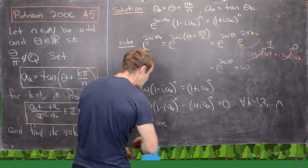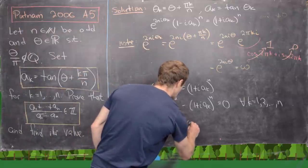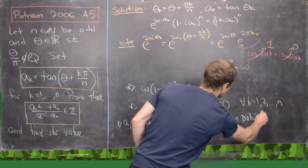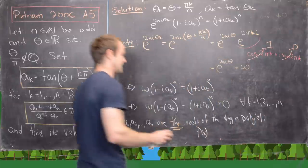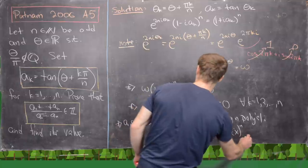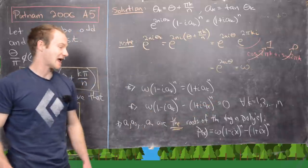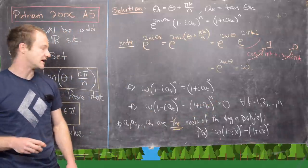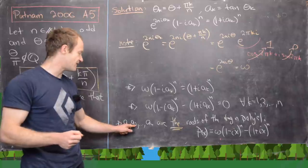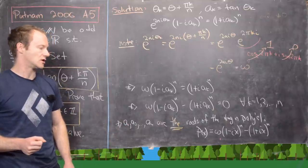The values A_1, A_2, …, A_N are the roots of the degree-N polynomial p(x) = ω(1 − ix)^N − (1 + ix)^N. This polynomial has complex coefficients but is still degree N, and since degree-N polynomials have at most N roots and we have found N distinct roots, we have found all the roots.